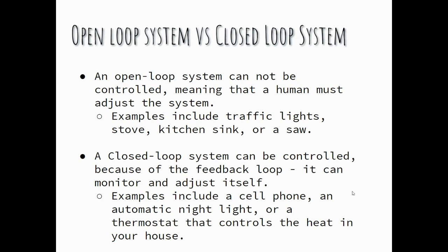Remember, an open loop system cannot be controlled, meaning that humans must adjust the system. They include things like a traffic light, stove, kitchen sink, or a saw. A closed loop system can be controlled because of the feedback loop. It can monitor and adjust itself.